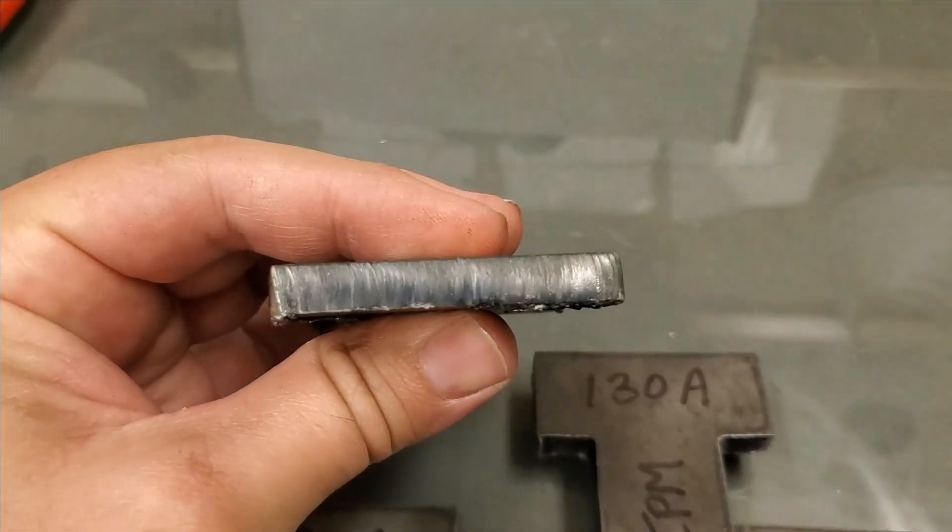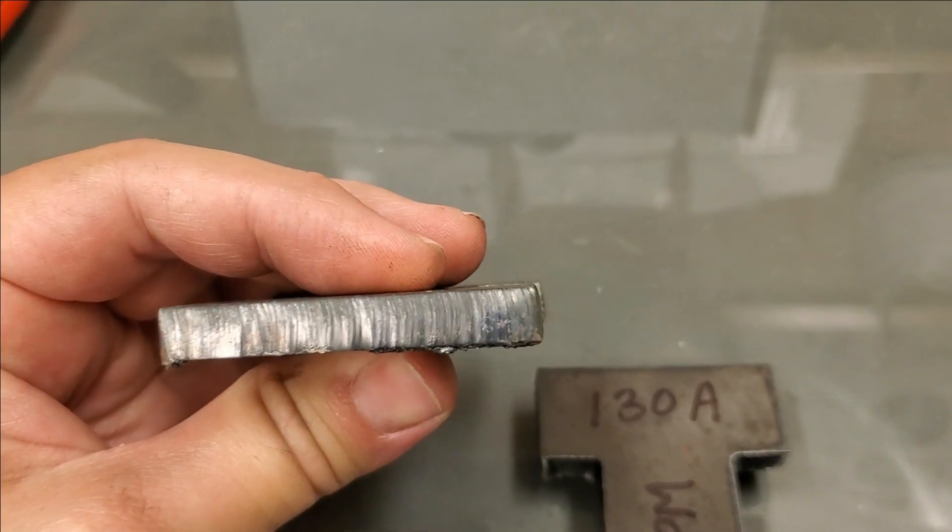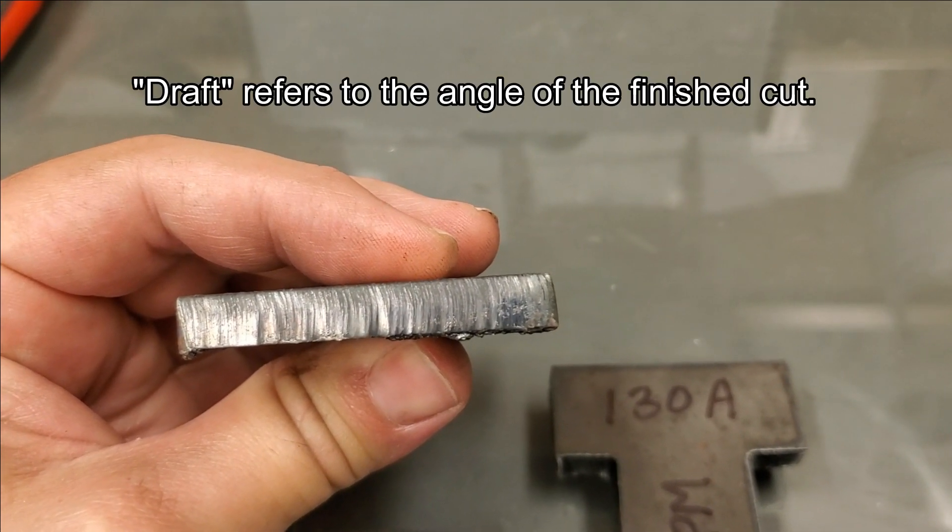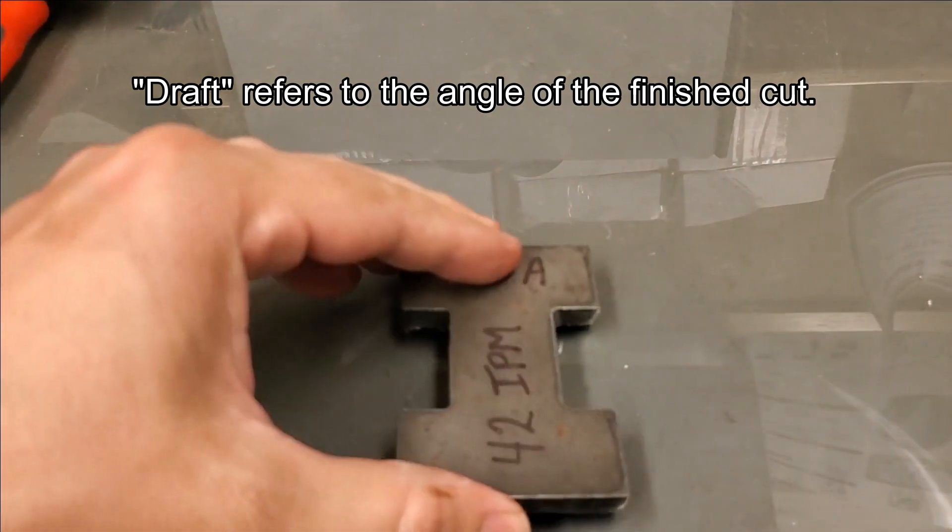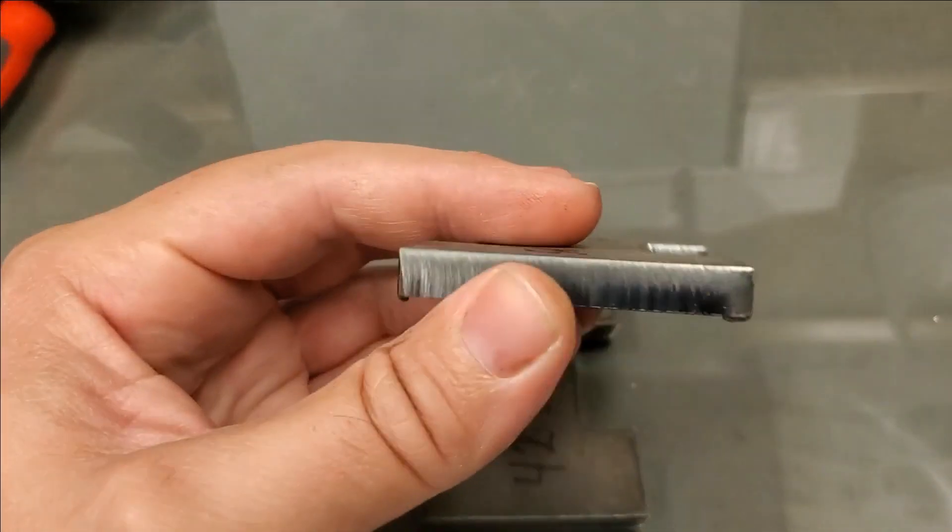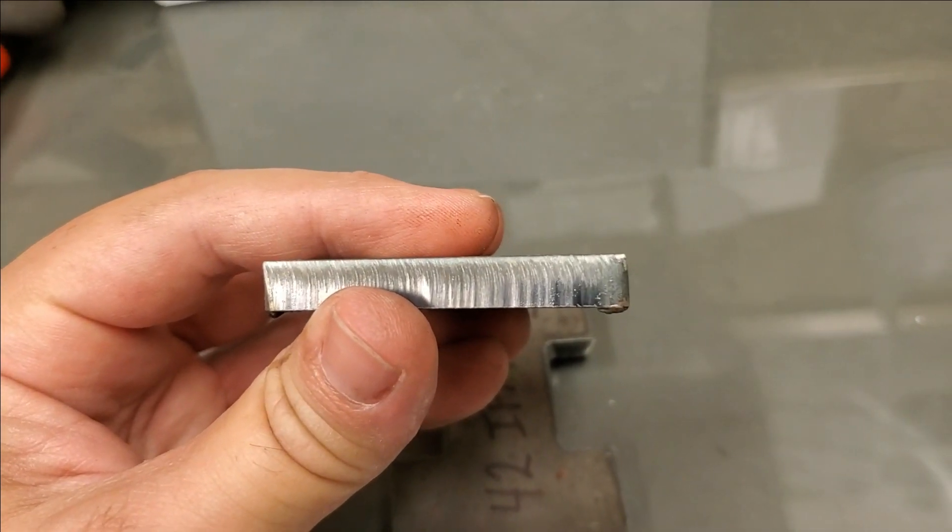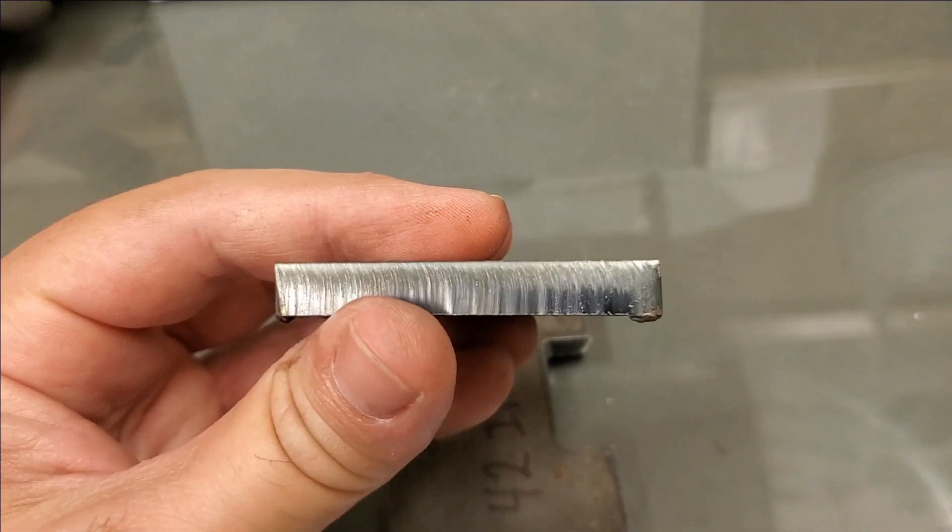As you can see on this one, you can see there's actually quite a bit of draft to the cut, and even knocking it down 10% actually cuts down on the amount of draft, which is pretty nice. It's a much squarer cut.